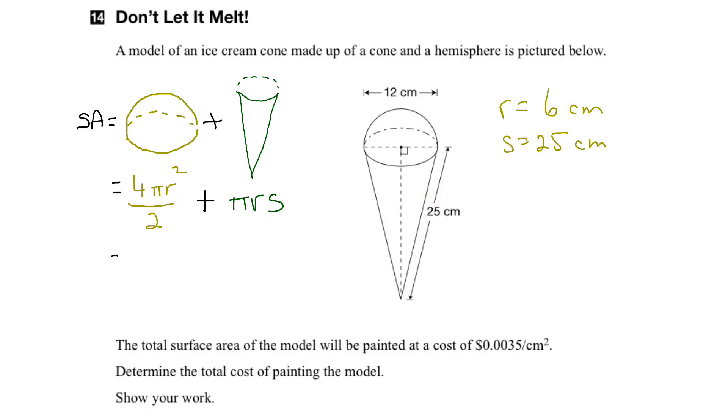So this would be, right away, 2 goes in there once, goes in there twice, so we get 2π times 6² plus π times 6 times 25. So order of operations, 6 squared first.